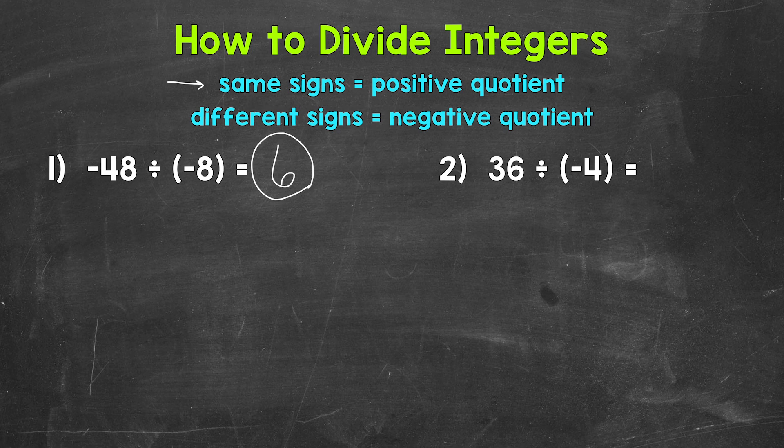Now, let me back up here and further explain same signs. So same signs would be a negative divided by a negative, like number 1, that equals a positive. And then also a positive divided by a positive equals a positive.